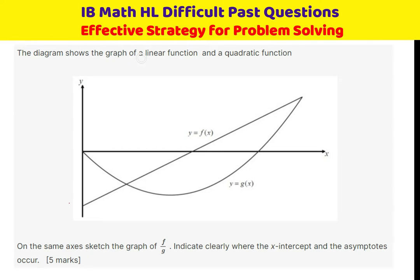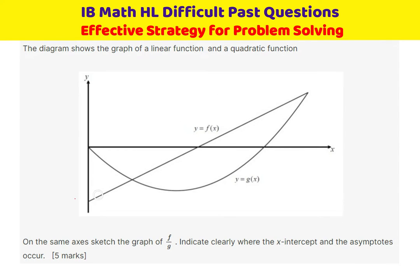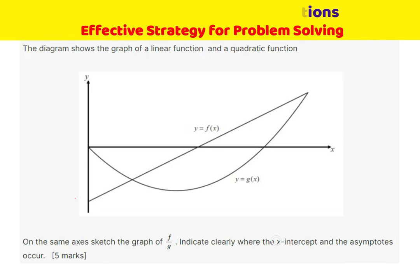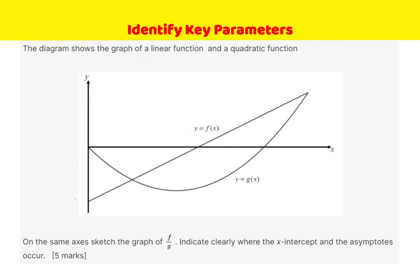The diagram shows the graph of a linear function and a quadratic function — that is the linear function, a straight line, and a quadratic function. On the same axis, sketch the graph of F over G. Indicate clearly where the x-intercepts and the asymptotes occur. So, the question is to graph F over G.